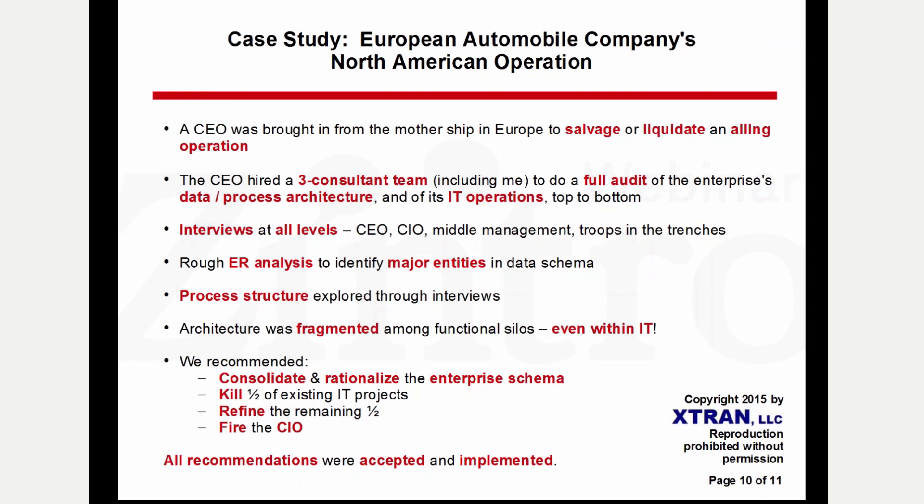We recommended: number one, consolidate and rationalize the enterprise schema; then on the process side, kill half of the existing IT projects that were underway, go through the remaining half and clean them up, and — by the way — fire the CIO because he was causing a lot of the problems. The CEO, who had been brought over from Europe, actually accepted and implemented all of our recommendations. As a result, that operation over a period of years came back to pretty good health and actually recaptured a significant market share in terms of parts for their own automobiles in the North American market.